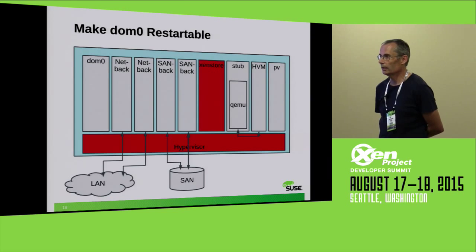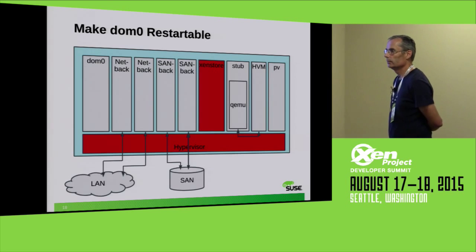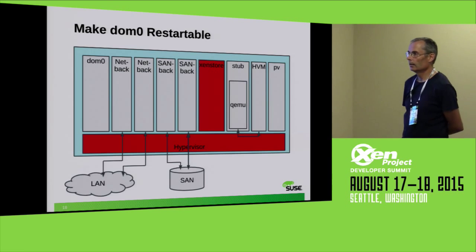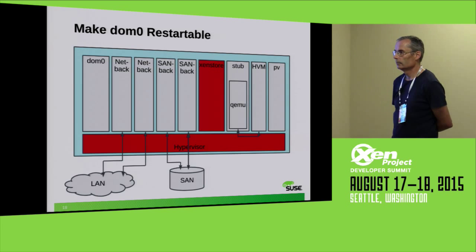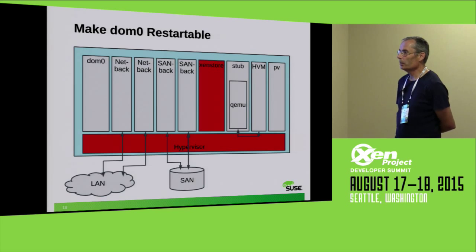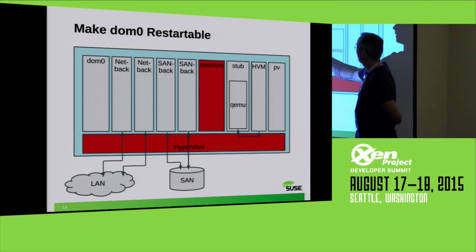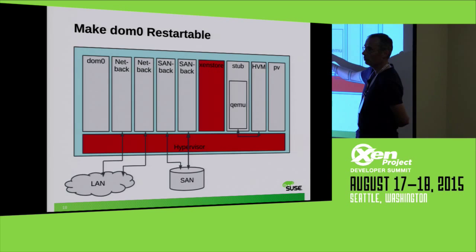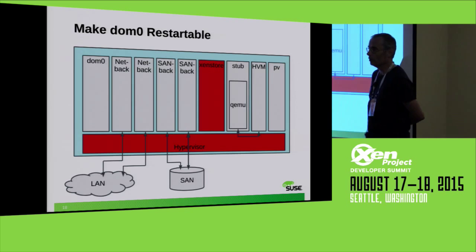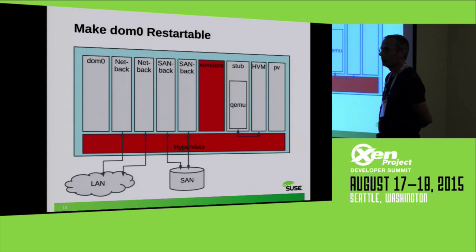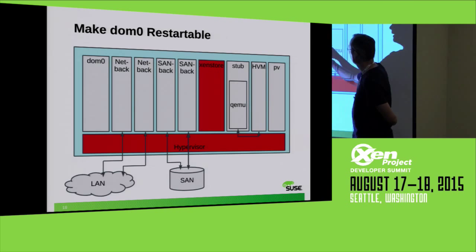Another idea: what if you have multiple XenStores responsible for different sets of domains? The problem is that the backend's entries are in XenStore as well, so backends would have to talk to multiple XenStores. I'd keep the logic together — backends and the VM talk to the same XenStore — but I have one backend per PCI card and multiple domains can go to the same backend.